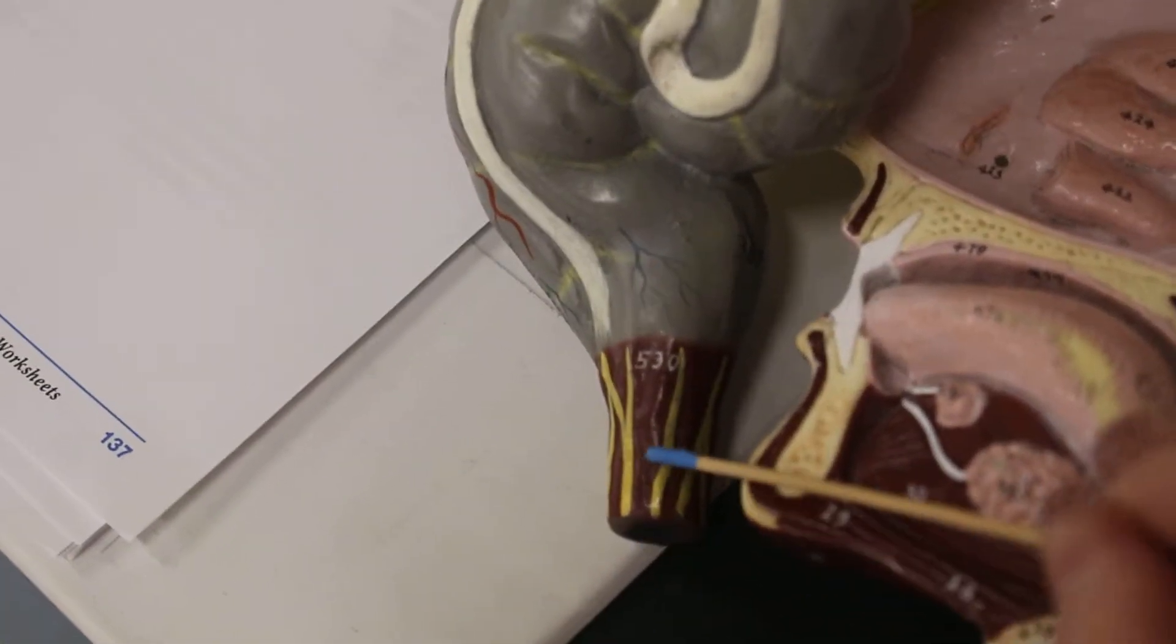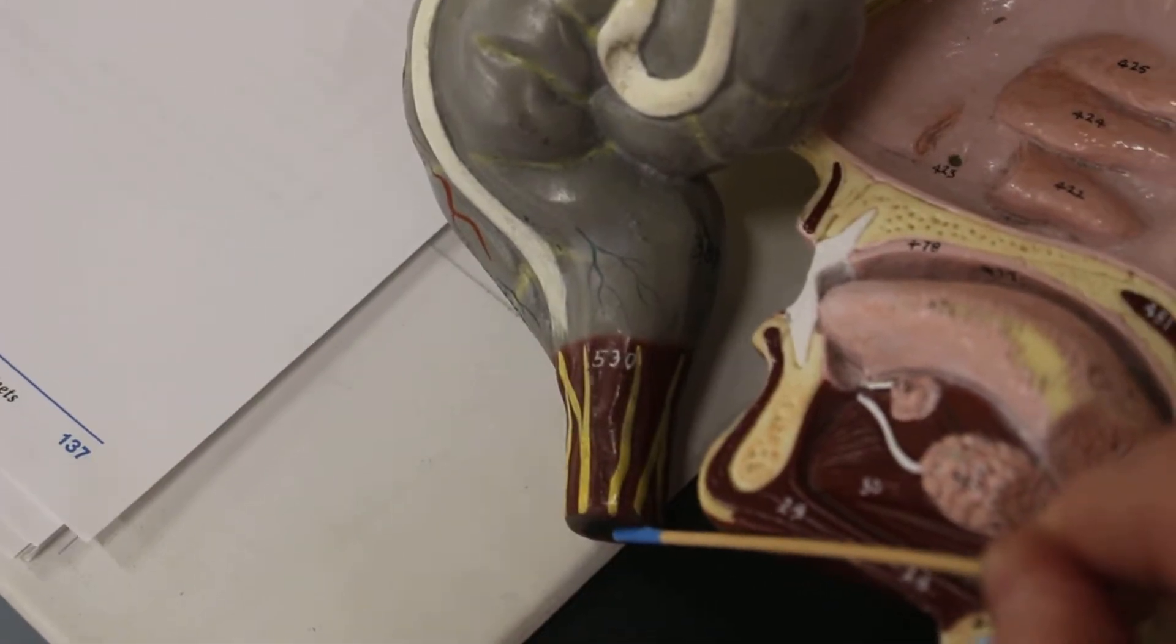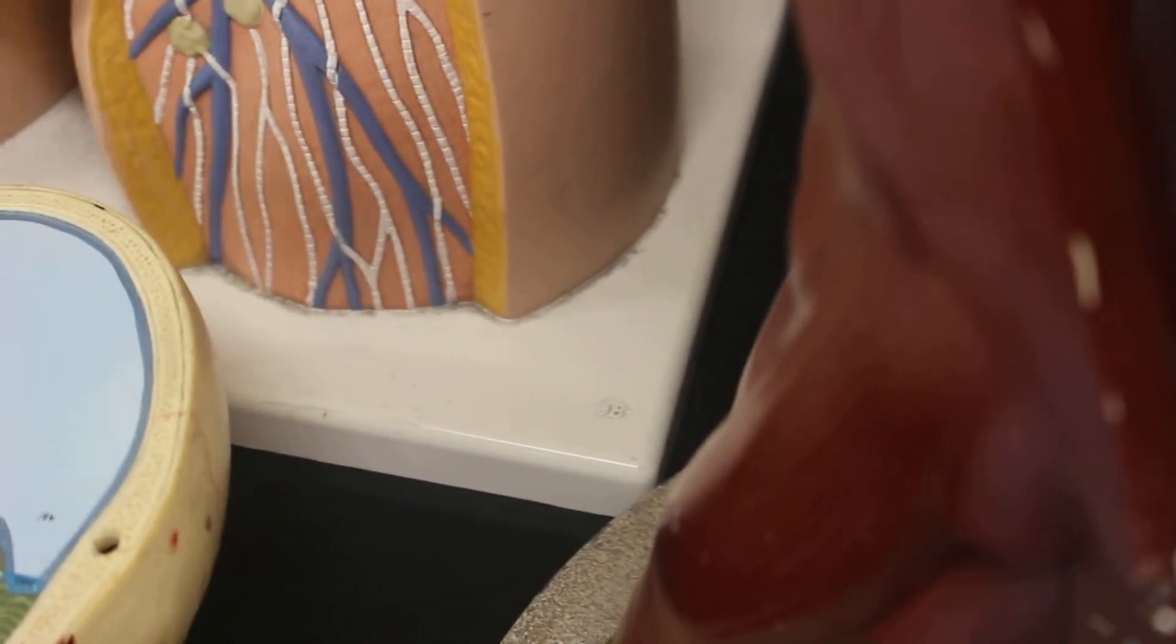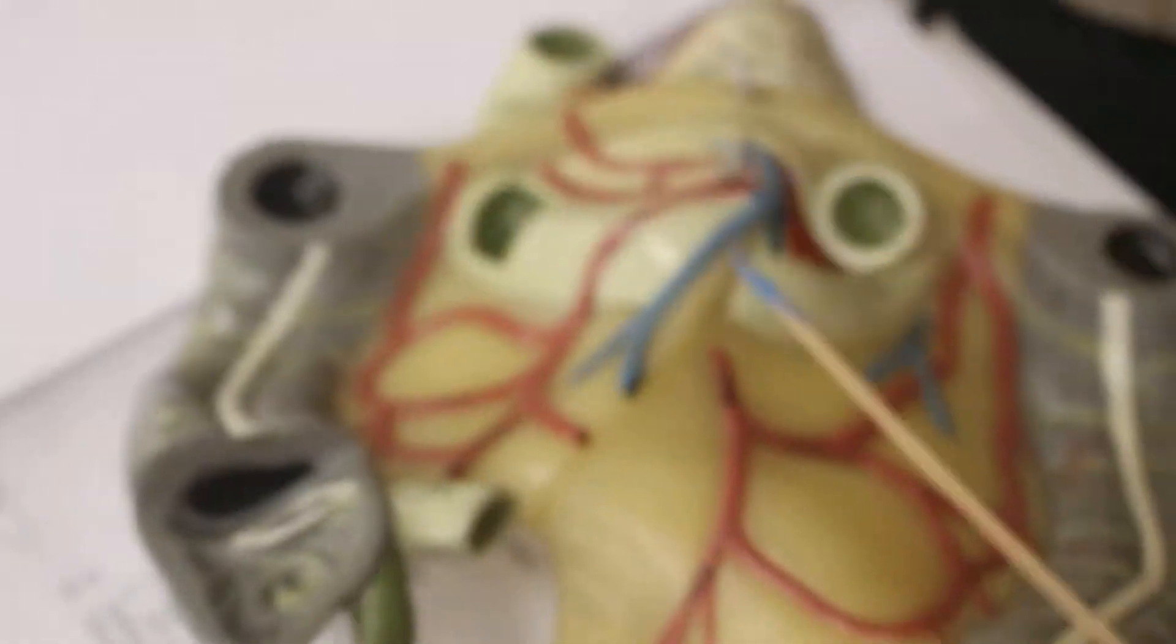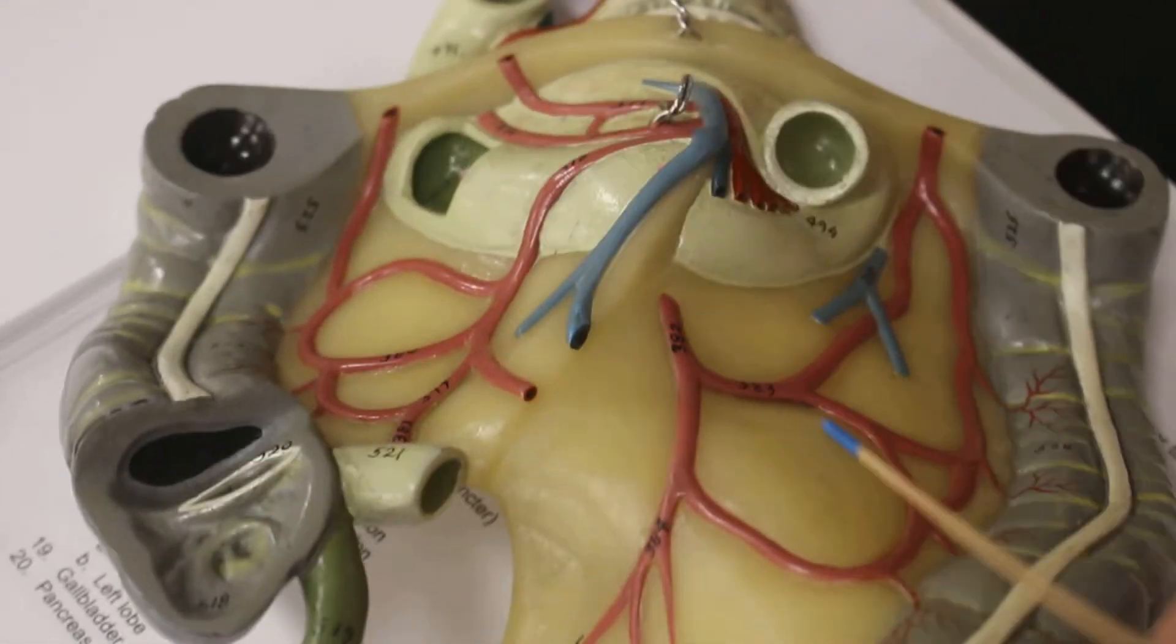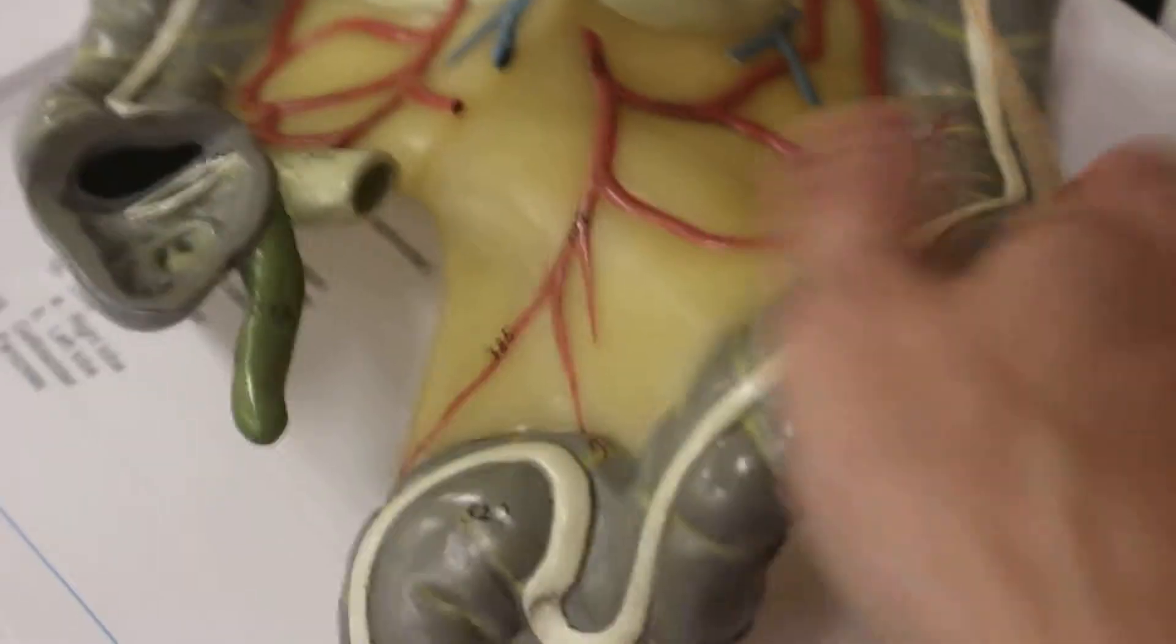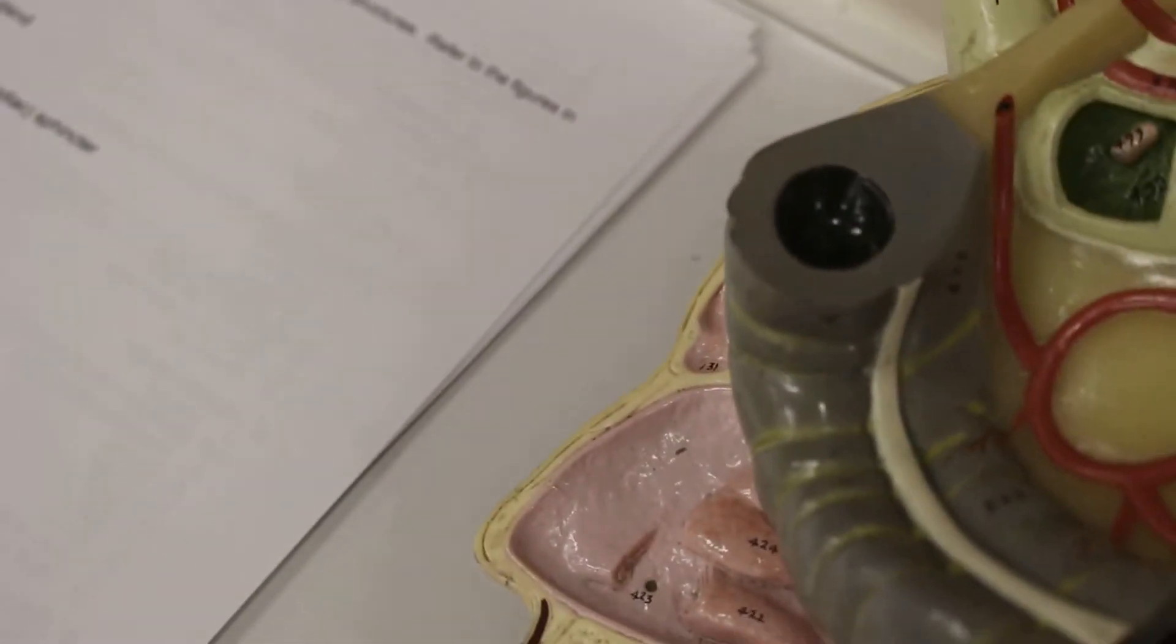the rectum, the anal canal, and the anus. It's also worth pointing out that this tissue here is part of the peritoneum. Alright, that is almost it.